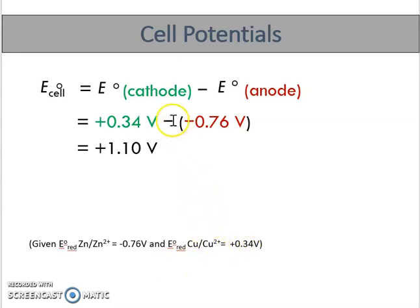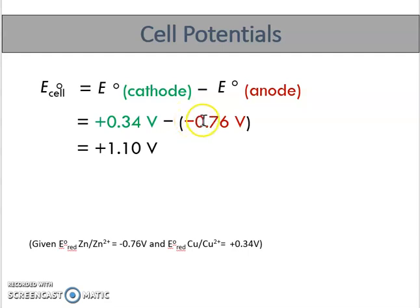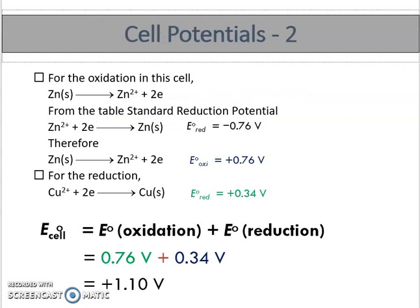Substituting into the first formula: E⁰cell = E⁰cathode − E⁰anode = (+0.34 V) − (−0.76 V) = +1.10 V.